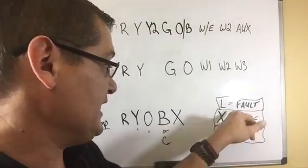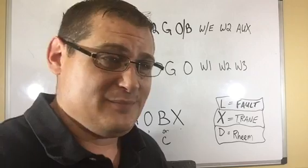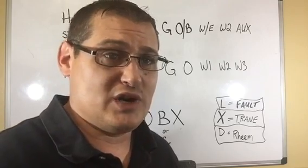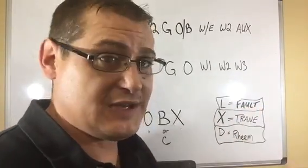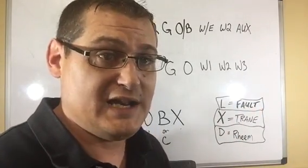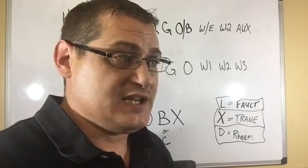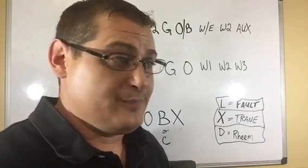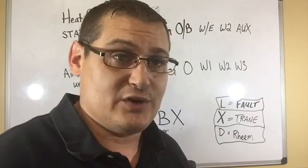I want to talk about a few other terminals here that you may see and just what they do. You may see an L terminal. I think York is still using L, possibly maybe Carrier. It really doesn't matter, as long as you know what it does. The L terminal, if you ever see that in a thermostat or outside, is typically the fault terminal. That means it's going to send power up to the thermostat if there's a fault outside the outdoor unit. All it does is light up a light in the thermostat.